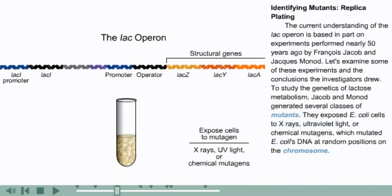The current understanding of the lac operon is based in part on experiments performed nearly 50 years ago by Francois Jacob and Jacques Monod. Let's examine some of these experiments and the conclusions the investigators drew. To study the genetics of lactose metabolism, Jacob and Monod generated several classes of mutants. They exposed E. coli cells to X-rays, ultraviolet light, or chemical mutagens, which mutated E. coli's DNA at random positions on the chromosome.